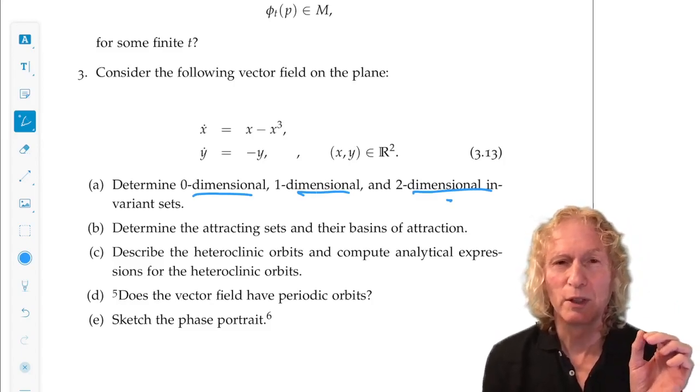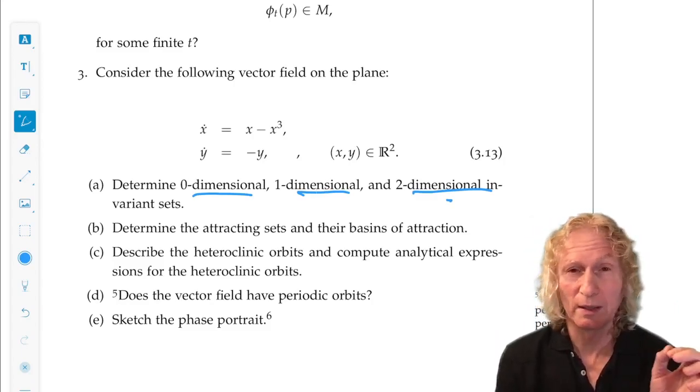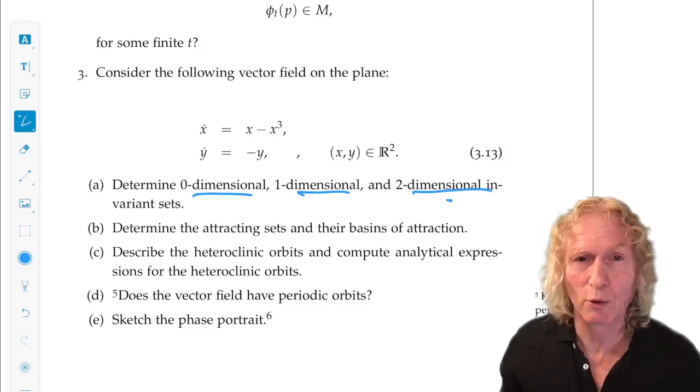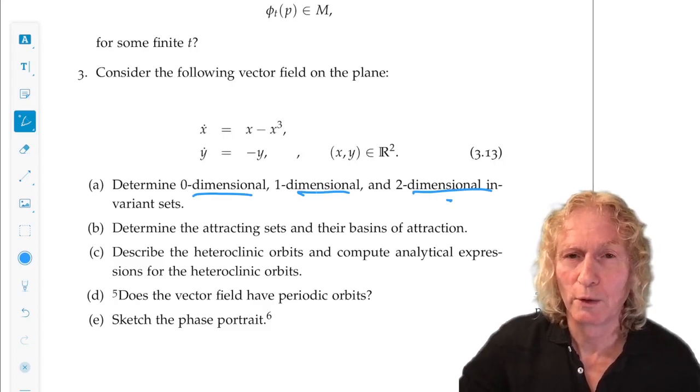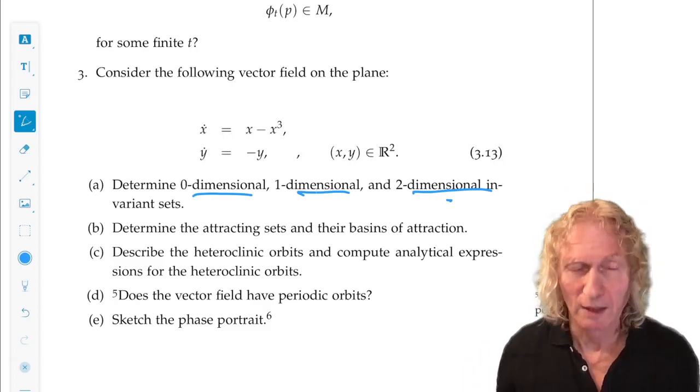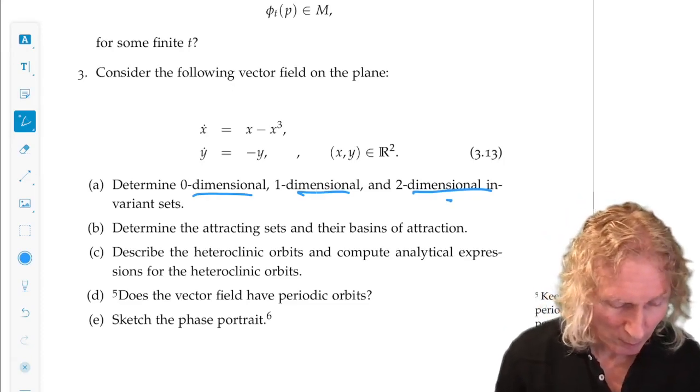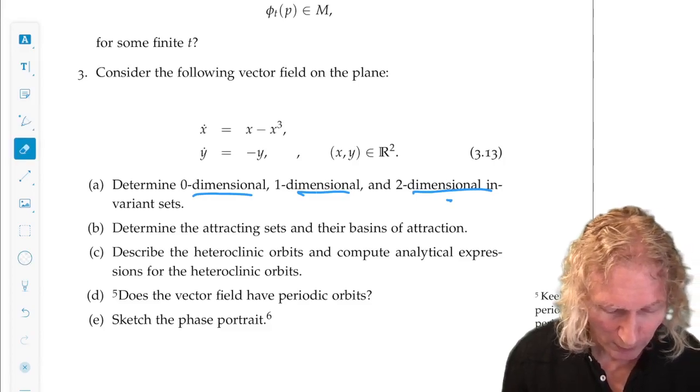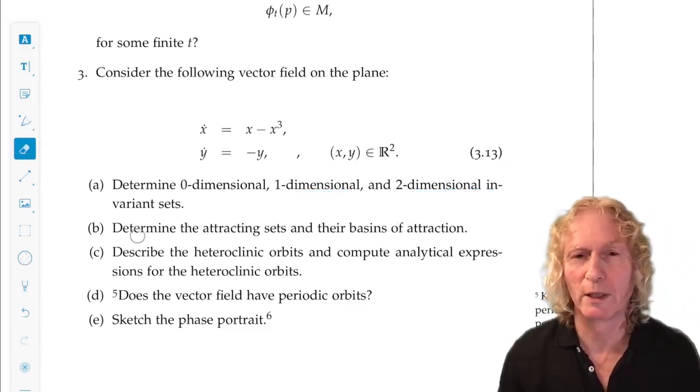In general, the dimension of a set is the number of independent coordinates required to describe a typical point in that set. Now, dimension theory is a big theory in its own right in mathematics, but that's essentially the intuitive notions are all that we're going to need in this course.